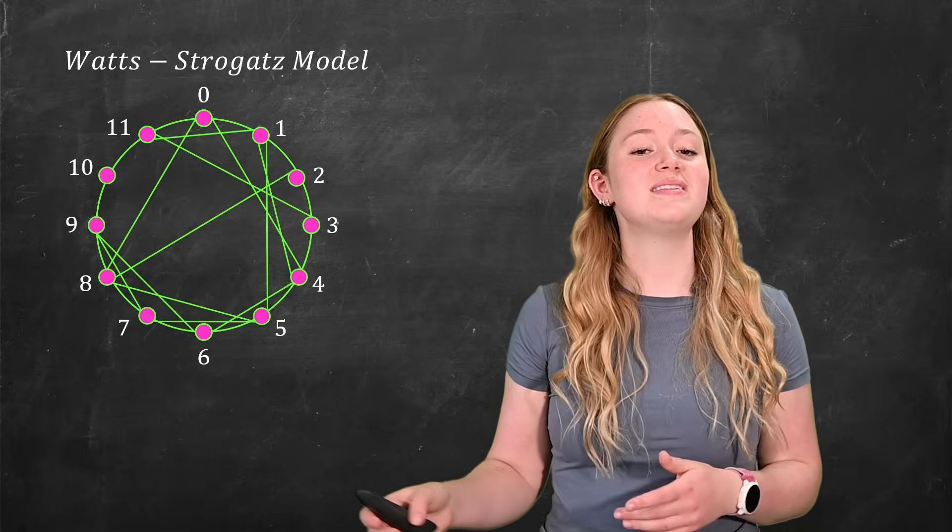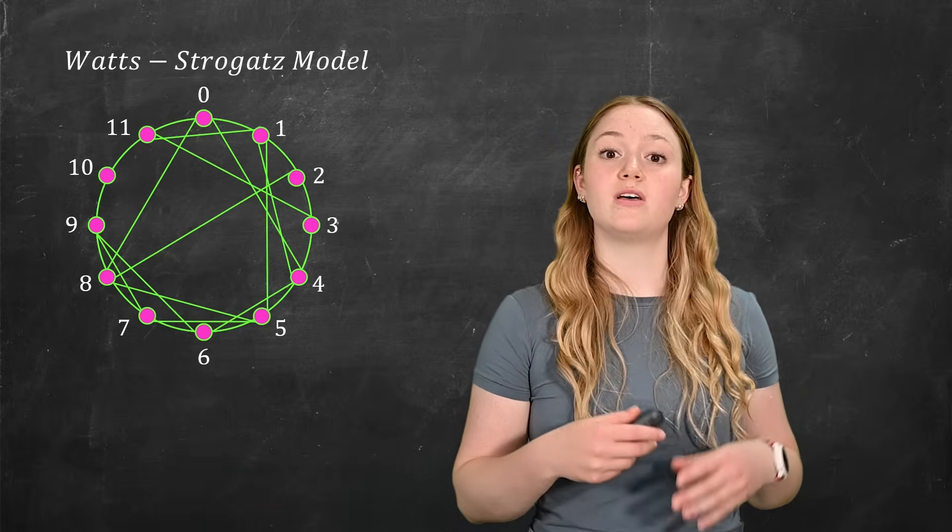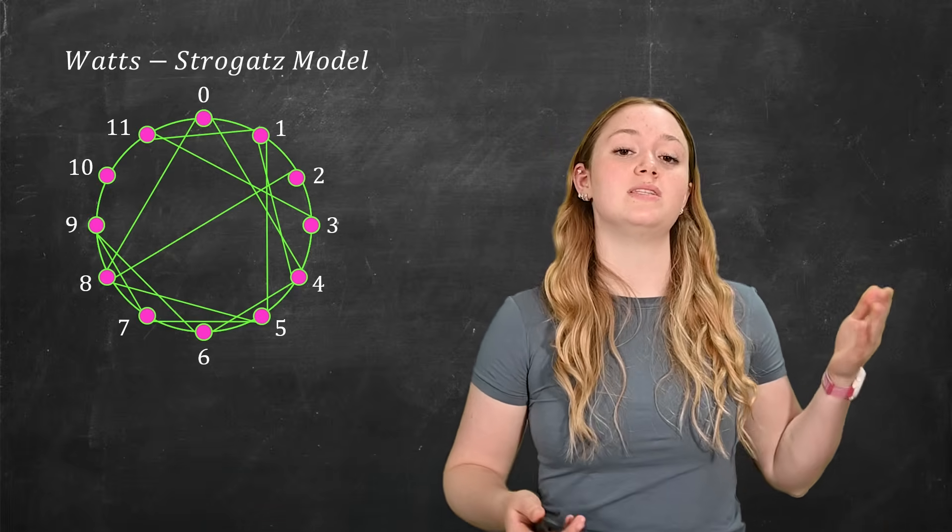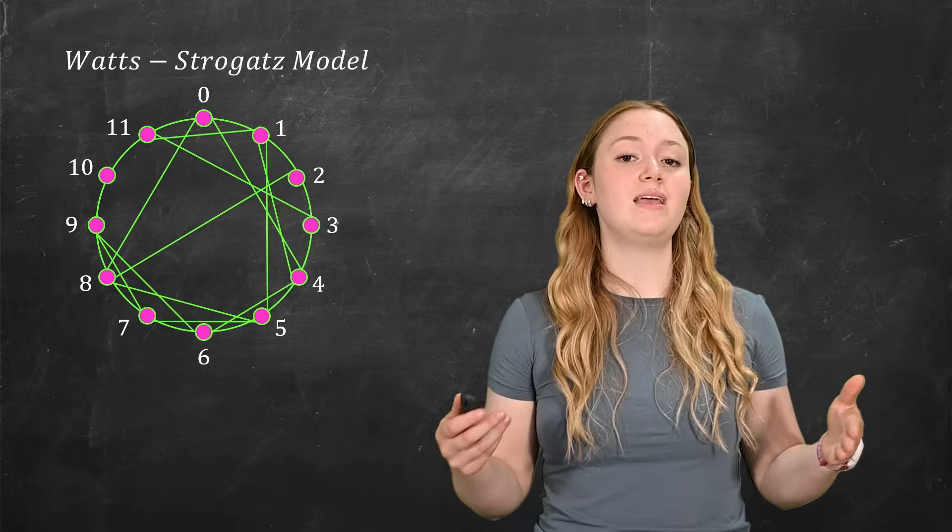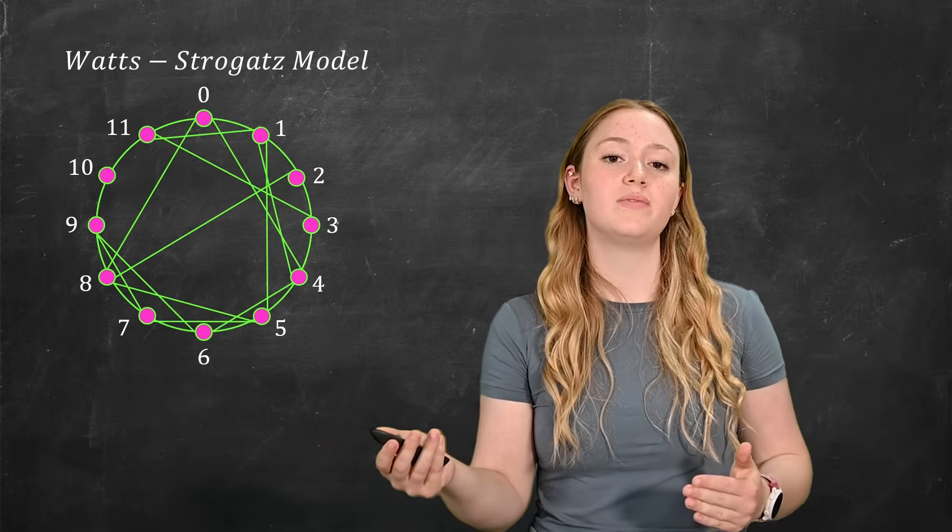Okay, so now you can see what the algorithm does. But why does this work? Well, remember earlier how I was talking about rewiring with probability p, where p is a number between zero and one that represents a likelihood that an edge between two vertices is going to be rewired.